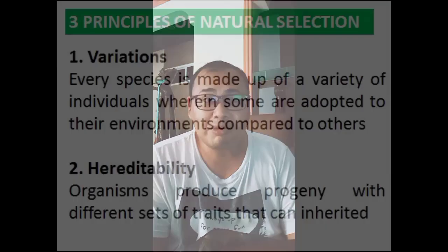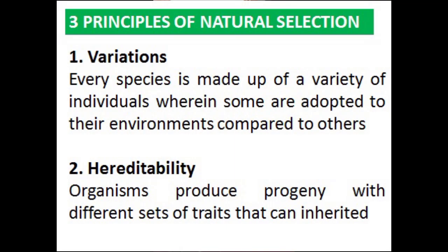There are three principles of natural selection. The first one is variation: every species is made up of a variety of individuals wherein some are adapted to their environment compared to others. Even just among Filipinos, there is so much variation — Ilocano, Kapampangan, Bicolano, Tagalog. The same goes for animals: for example, dogs — there are many breeds, and people try to breed new varieties to create new species of dogs. That is one form of natural selection.